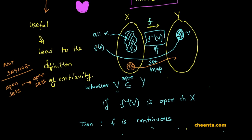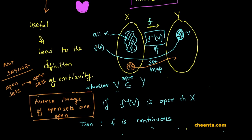What we are saying, however, is inverse images of open sets are open. So, if that happens, if this particular thing happens, then we say that the function f is continuous.